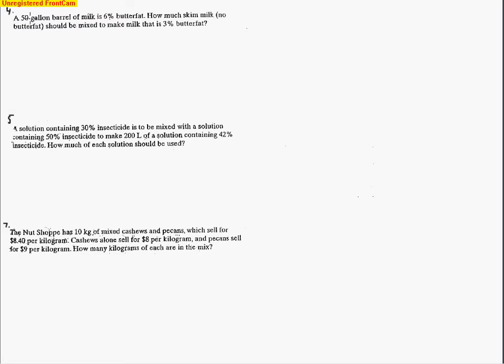Here we have a 50-gallon barrel of milk with 6% butterfat. How much skim milk should be added? Notice they're giving us a hint — there's no butterfat in this skim milk. We're figuring out how much skim milk with no butterfat should be mixed to make milk that is 3%. The milk we have is 6%, but we want to bring it down to 3%, so adding skim milk increases the volume but decreases the percentage of butterfat.